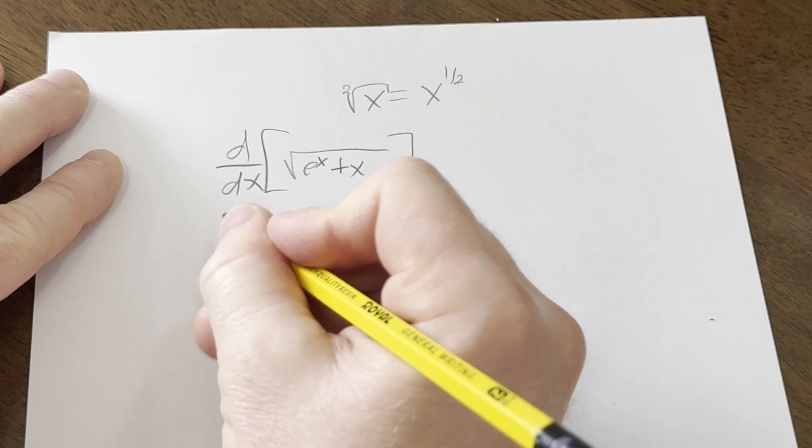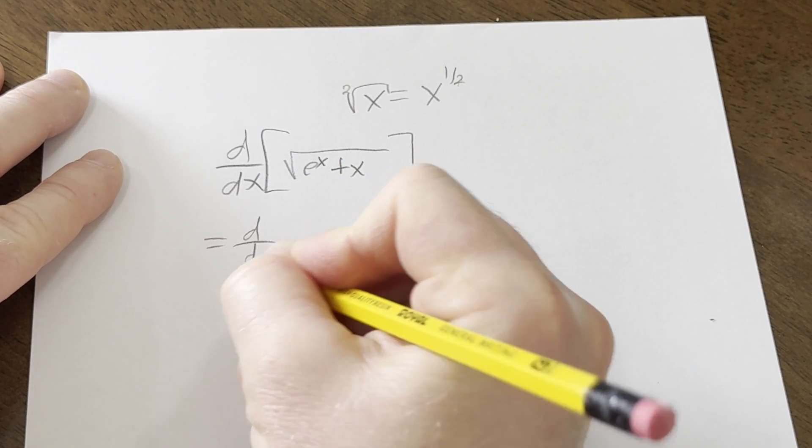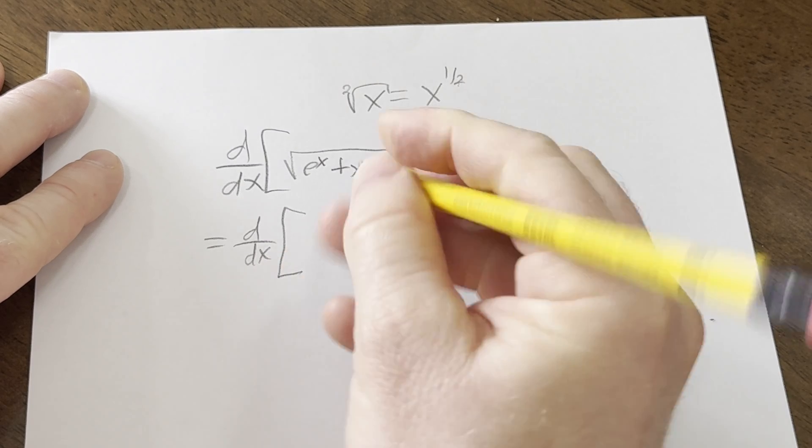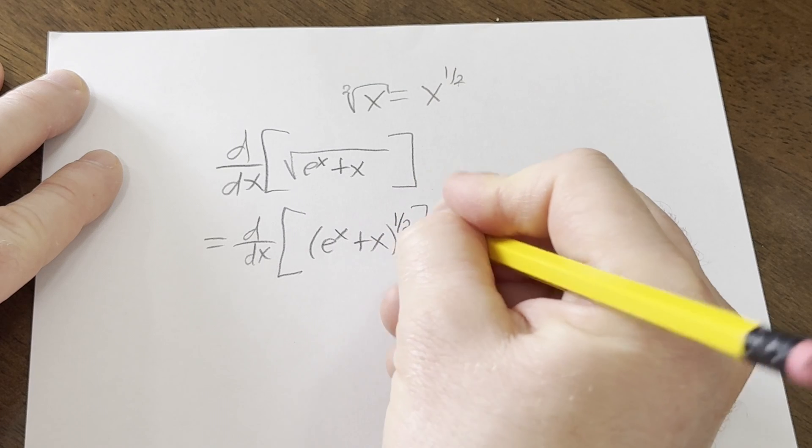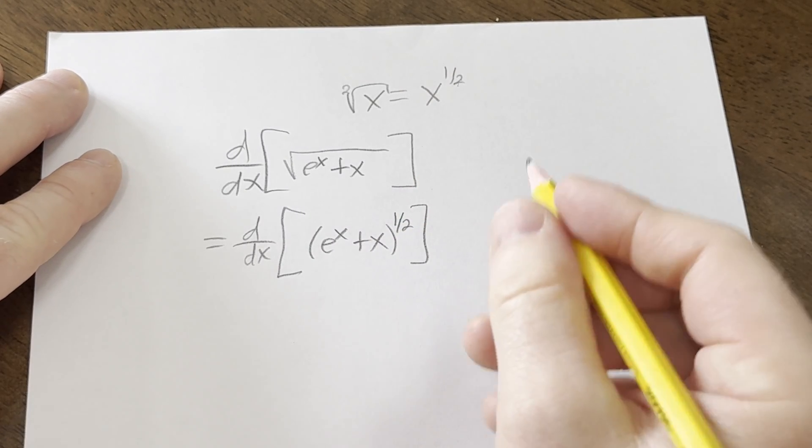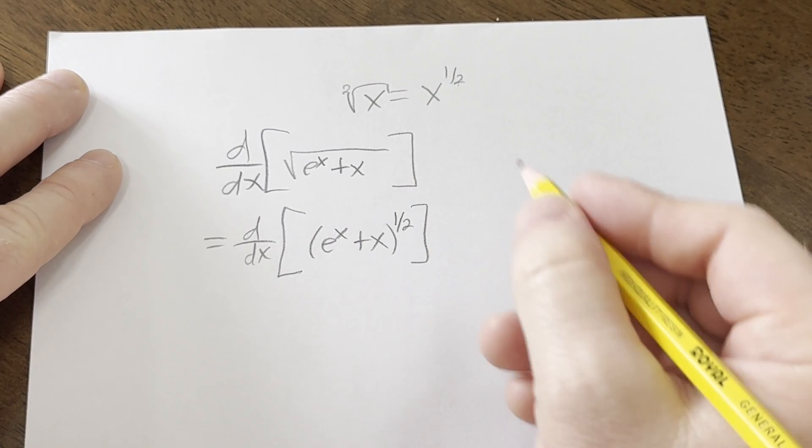So let's go ahead and do that. So this is equal to d/dx, I'm going to use a bracket here. Parentheses e to the x plus x, and all of this is to the 1 half power. All right, so now we're ready to take the derivative of this power function.